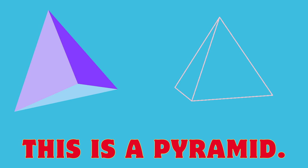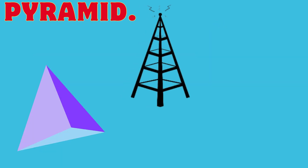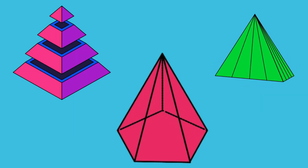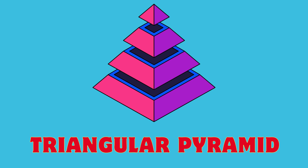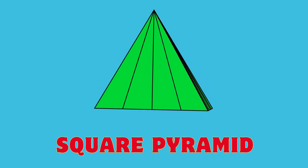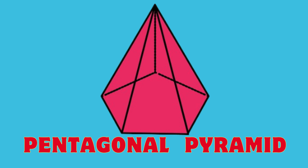What shape is it? This is a pyramid. This electrical tower is pyramid-shaped. These structures are pyramids. Pyramids of many kinds — this is a triangular pyramid, this is a square pyramid, this is a pentagonal pyramid.